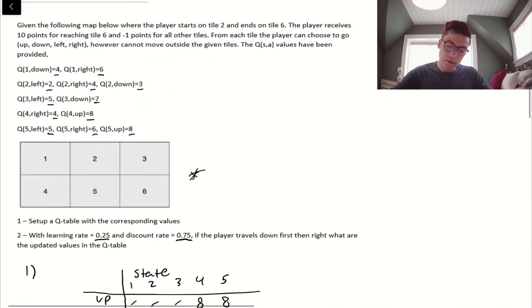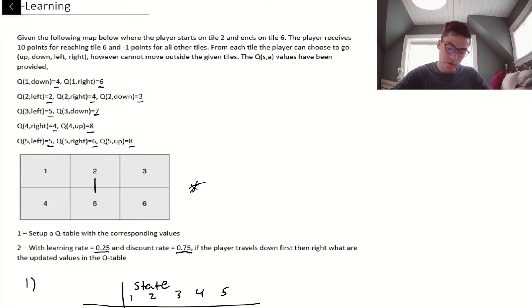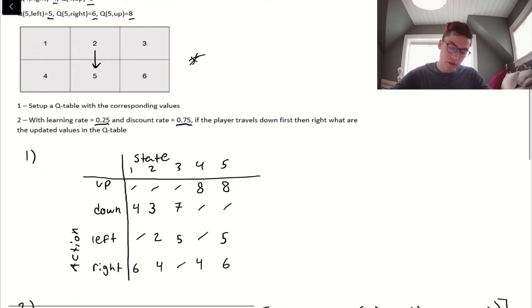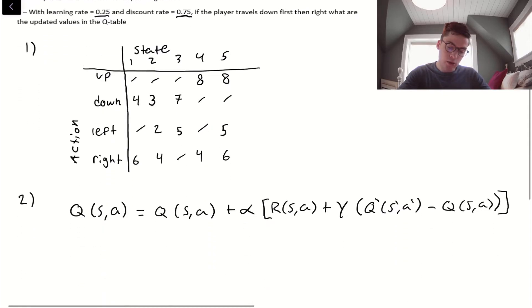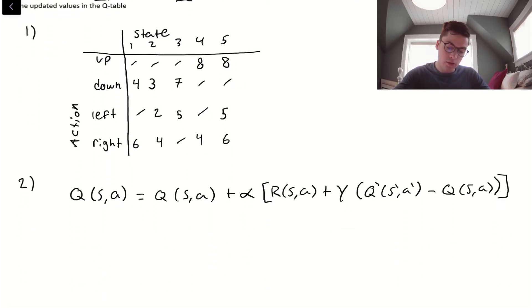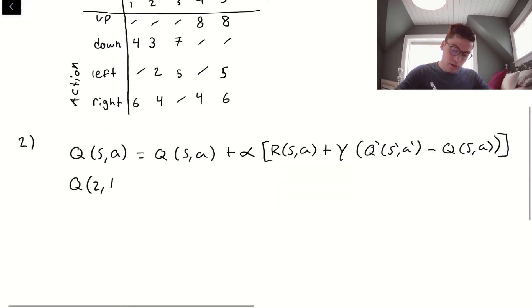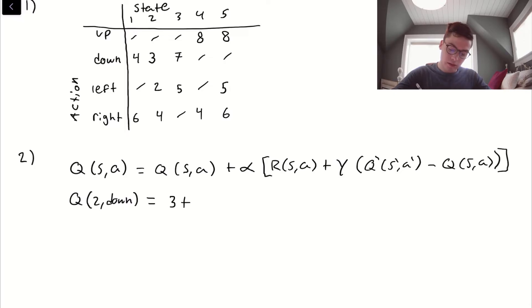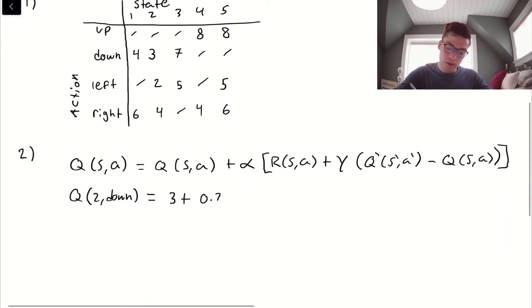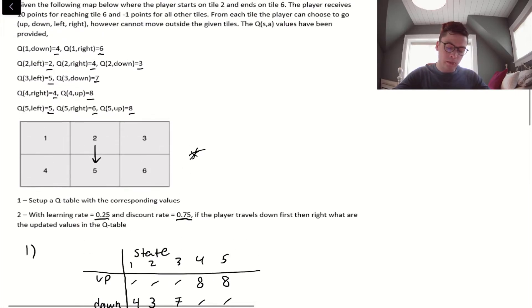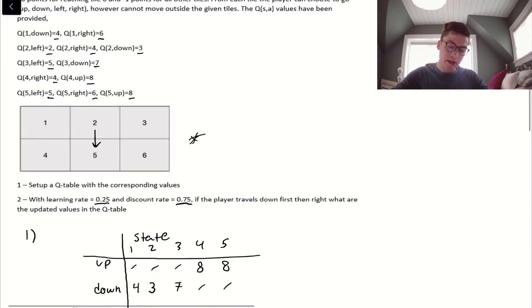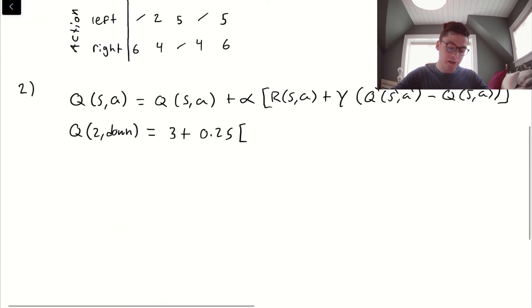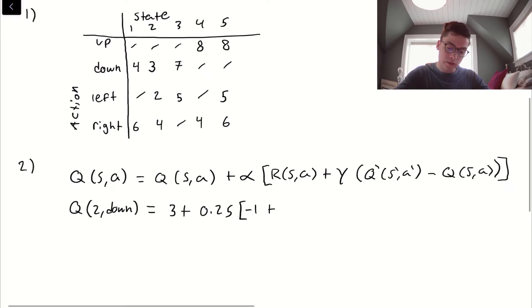Let's start. The first one they want us to do, players travel down. If you remember from the question, we start in tile 2, so we're going to go down to tile 5. We can go to our Q table and go 2 down. We can see that is 3. So, Q of 2 down is equal to 3 plus the learning rate, 0.25. And then the reward is going to be minus 1 because we aren't landing on tile 6.